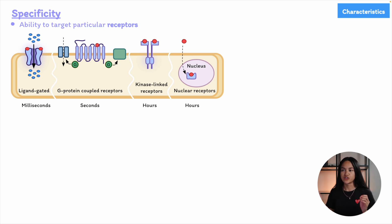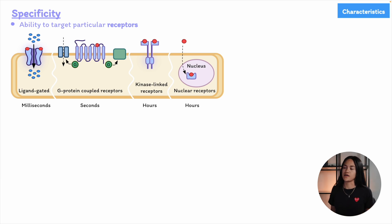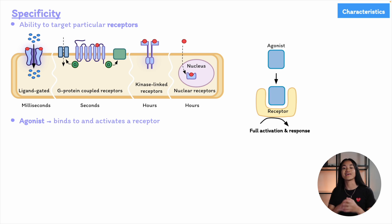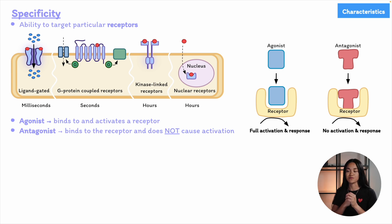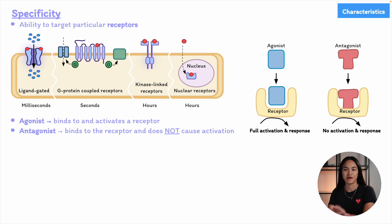Just because a drug binds to a receptor doesn't mean it will activate it. Drugs that bind and activate receptors are called agonists — they cause a biological response. Antagonists can bind to the receptor but do not activate it. So an agonist triggers the receptor while an antagonist simply binds without causing activation. We'll talk more about specificity in later pharmaceutics lectures.